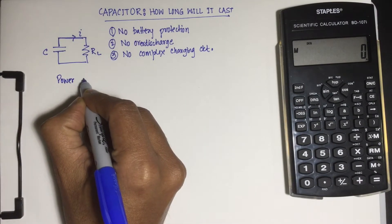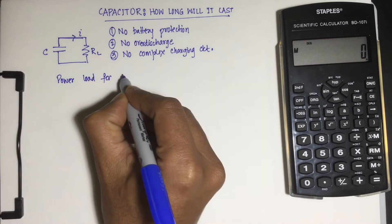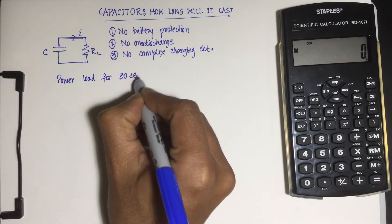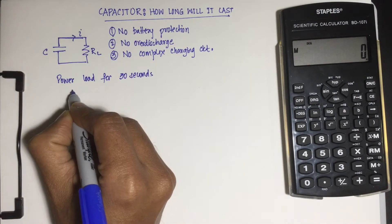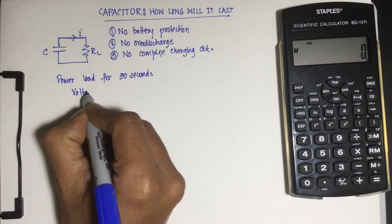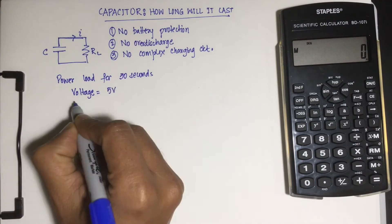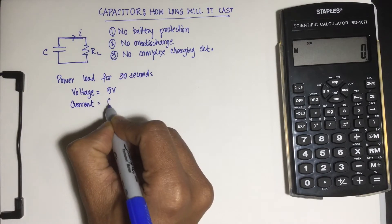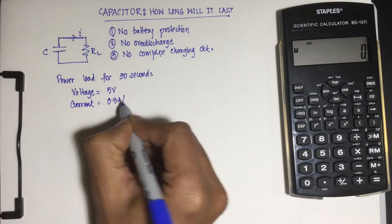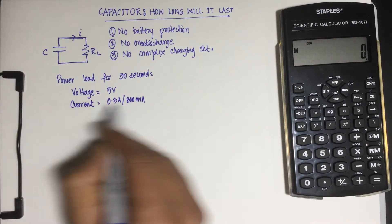Now we need to provide some power. Let's assume if it's a Raspberry Pi we need to provide power for about 30 seconds, that's good enough for us to do a shutdown on a Pi. If I look at a Pi 0 W, it's about 5 volts of input and current is approximately 300 milliamps or 0.3 amps.